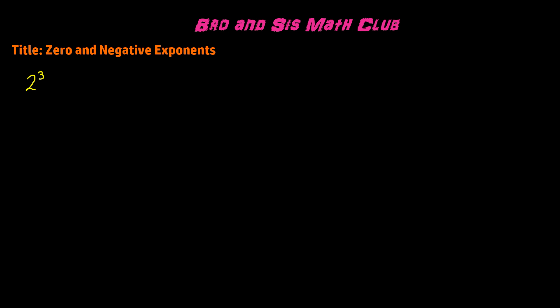Whenever you have exponents, you're going to have a base and an exponent. For example, let's say we have 2 to the power of 3. In this case, 2 is the base and 3 is the exponent. 2 to the power of 3 means we take the base, which is 2, and multiply it by itself 3 times. 2 times 2 times 2 gives us a product of 8, because 2 times 2 is 4, times 2 is 8.